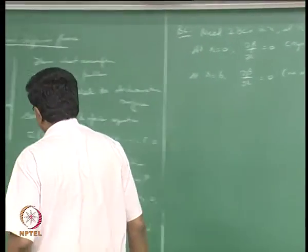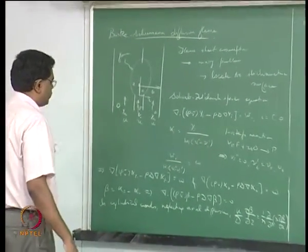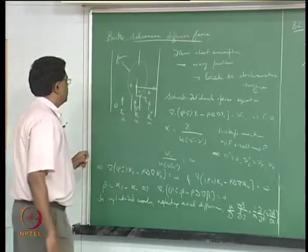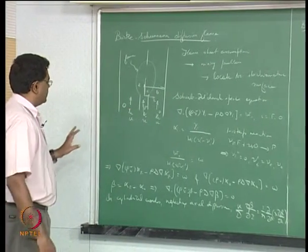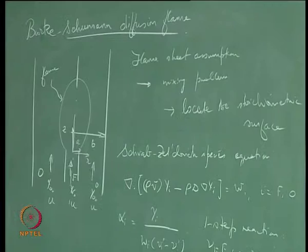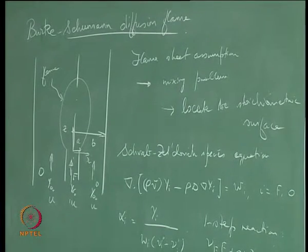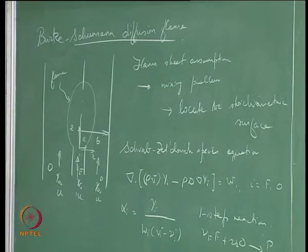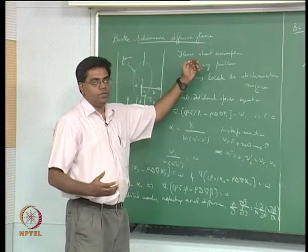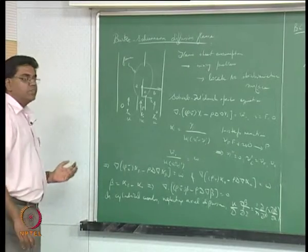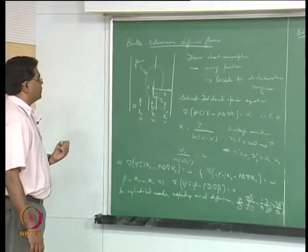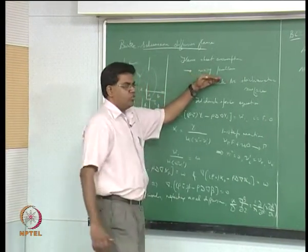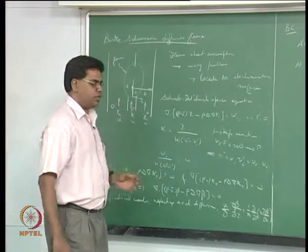We stopped here - let me go over what we have done so far. We are making a flame sheet assumption in this problem of co-flowing fuel and oxidizer at the same velocity. The flame sheet assumption is basically an infinite rate chemistry assumption, which boils down to the mixing problem. We adopt the 'mixed is burnt' approach, and all we need to do is locate the stoichiometric surface in order to get the flame shape.